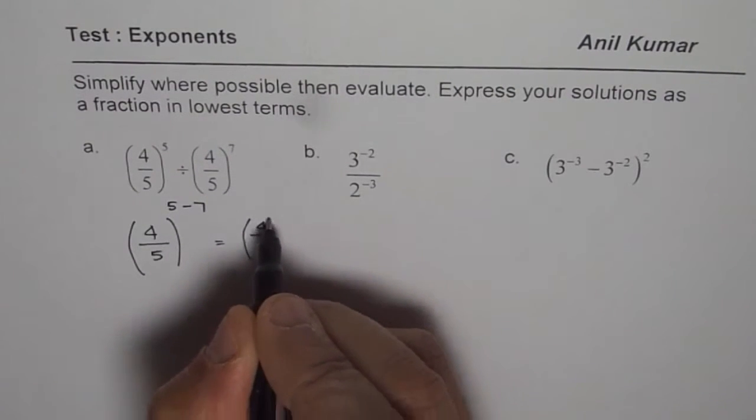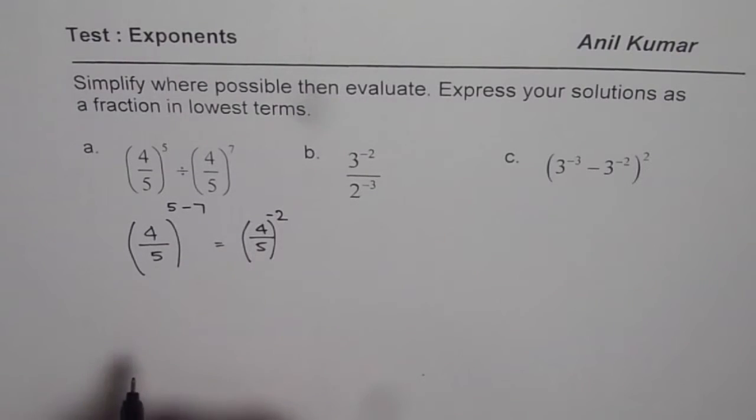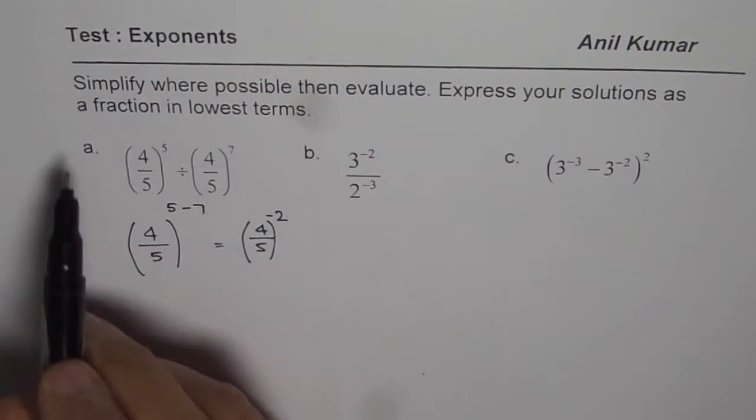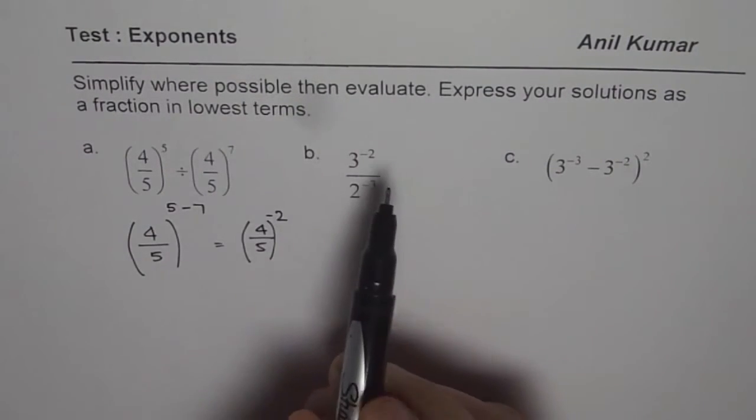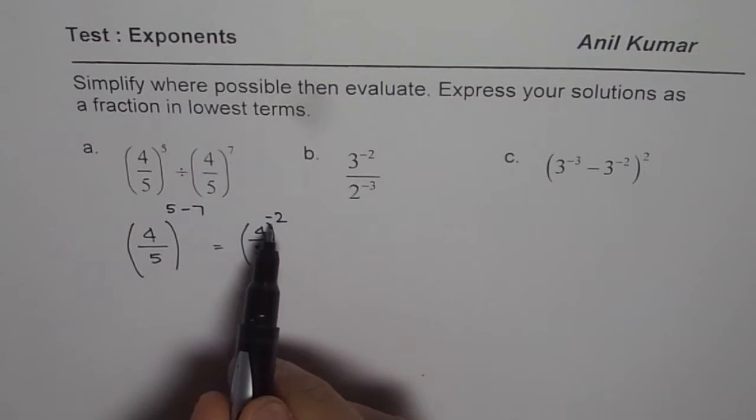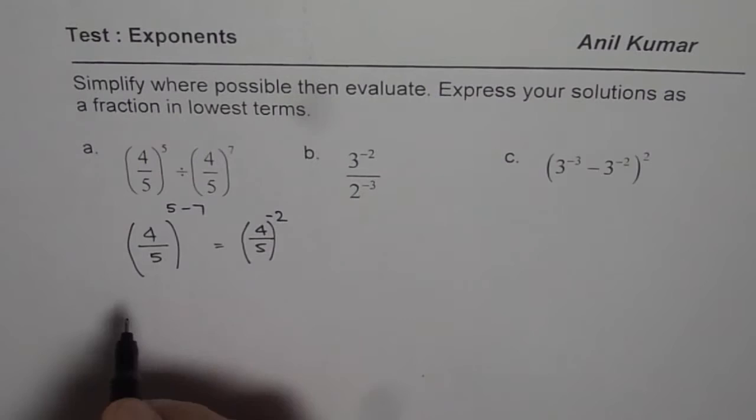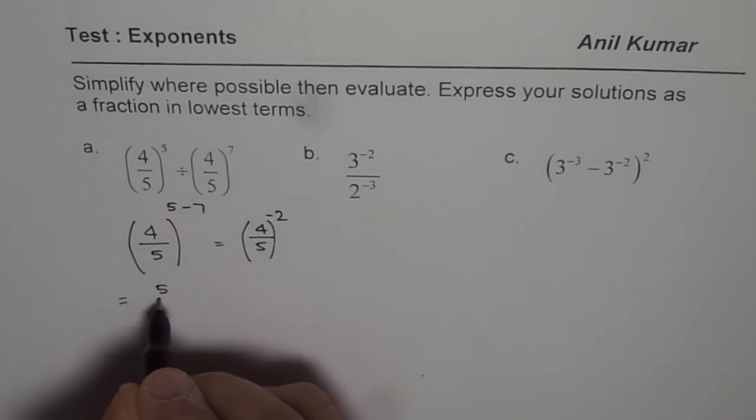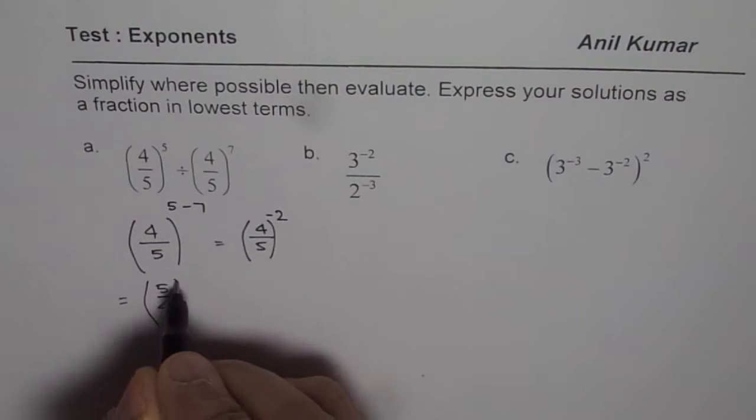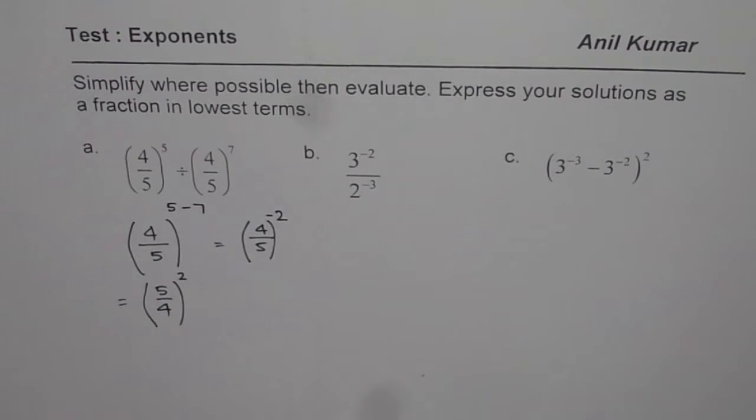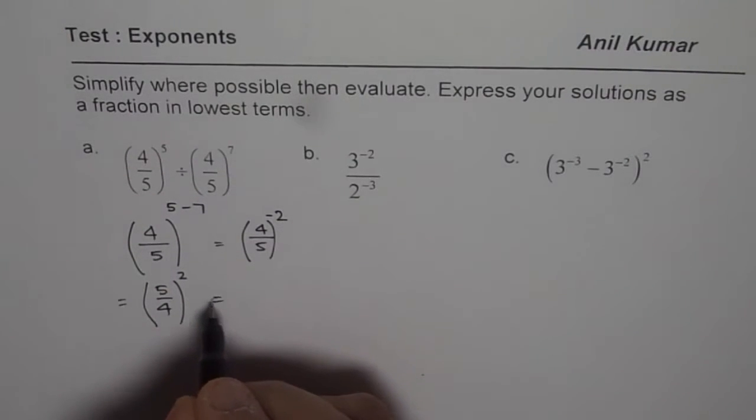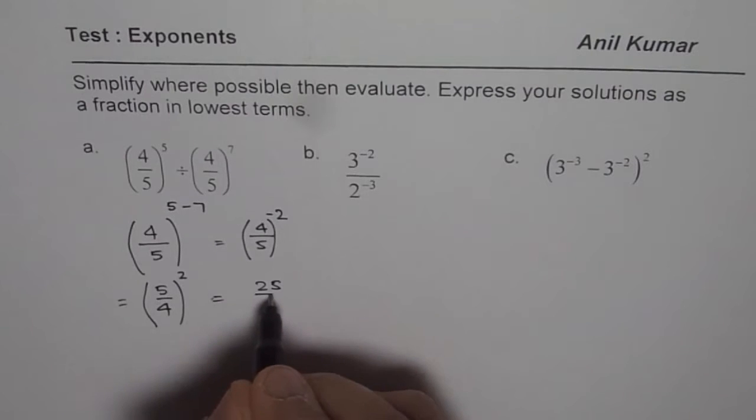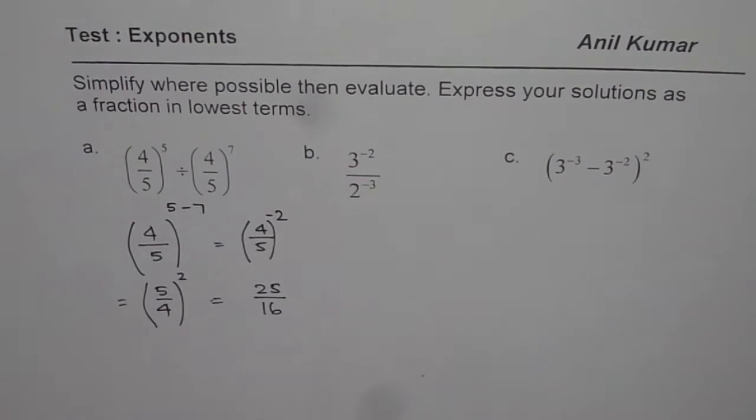So we get (4/5) to the power of minus 2. We need to express our solutions as a fraction in lowest terms and preferably positive. Minus means reciprocal, so this equals (5/4) squared. Then we square this and we get 25 over 16 as the solution.